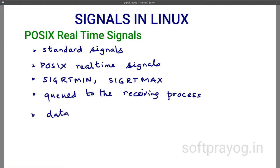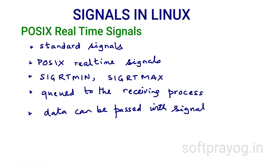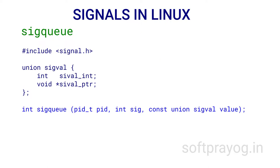An important characteristic of real-time signals is that they are queued to the receiving process — even if the same real-time signal is received many times, the multiple instances are queued in chronological order. Another important characteristic is that some data can be passed along with a signal in the form of an integer or a pointer, where the integer can be an application-defined code. The sigqueue function sends signal sig to a process identified by PID, along with a value that is a union of an int and a pointer. The receiving process can get this value in the signal handler via the siginfo_t structure. Multiple calls to sigqueue queue the signal to the process.